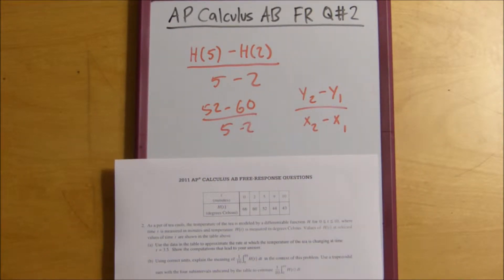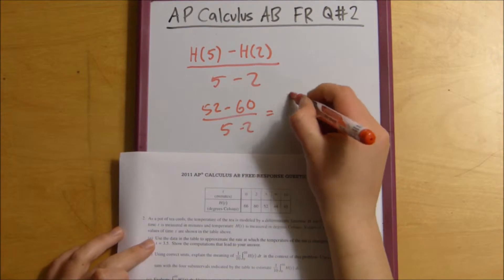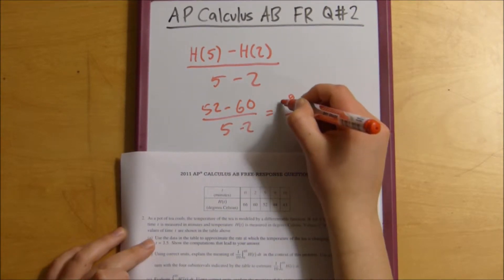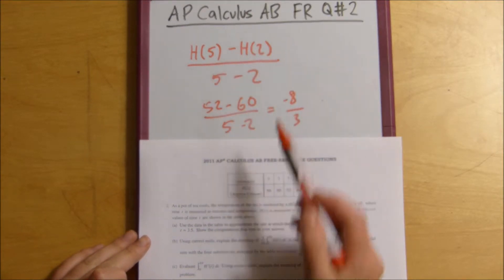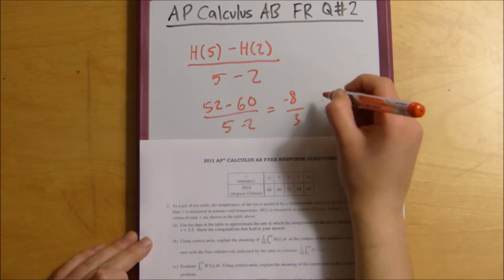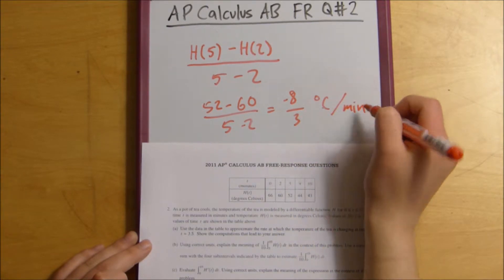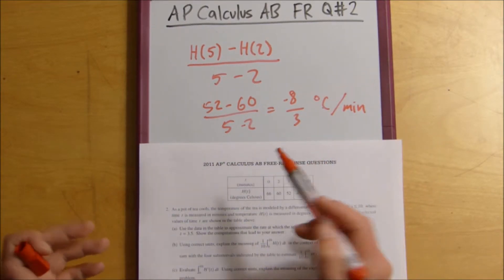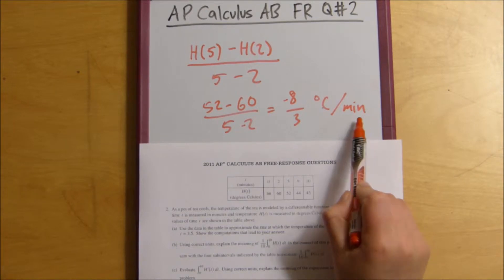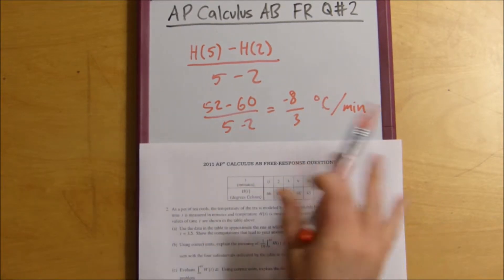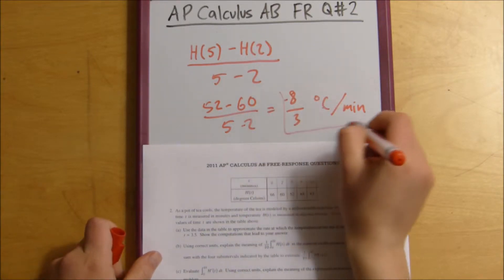And so we end up getting negative 8 over 3. And then for units, we know that our H of 5 and H of 2 are in degrees Celsius, and the bottom is in minutes. So that's a nice little way to know how to formulate your rate. Most of the time I just know that your time is on the bottom and whatever is changing over time is at the top. So that's the answer to A. Cool?